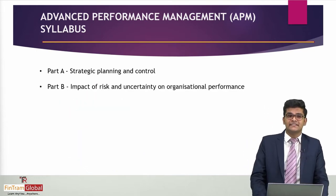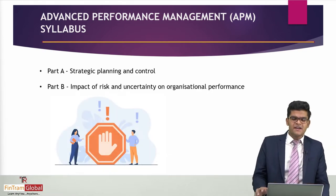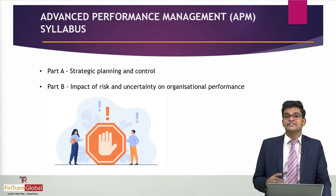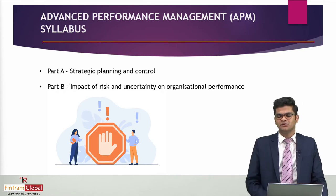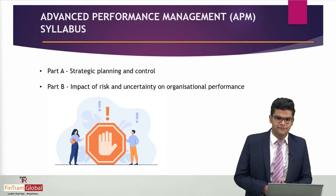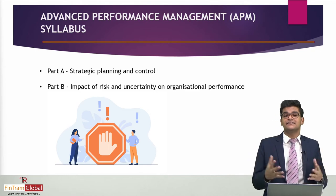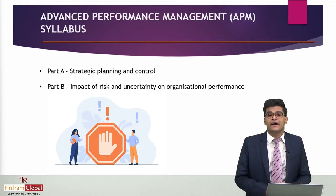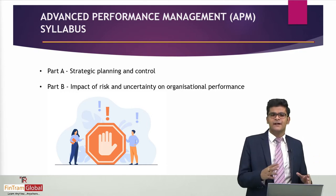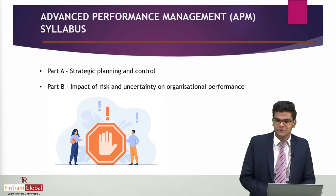Moving on to the next syllabus area, that is Part B: the Impact of Risk and Uncertainty on Organizational Performance. This is the syllabus area where we have a few calculations involved. When it comes to risk and uncertainty, we talk about expected values and various other probability theory concepts. This is comparatively the smallest syllabus area among all the others.